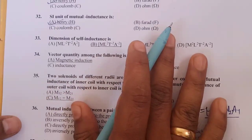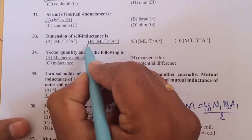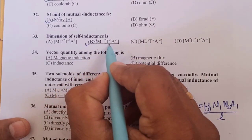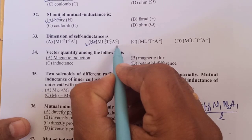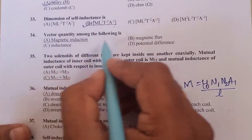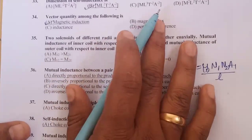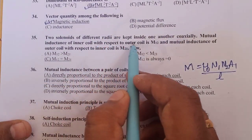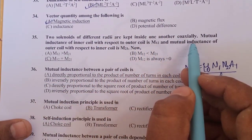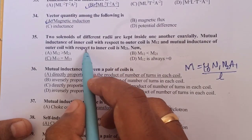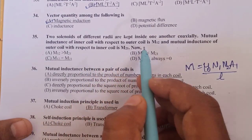SI unit of self inductance is Henry. SI unit of mutual inductance is also Henry. Dimension of self inductance is given by M1 L2 T to the power of minus 2 A to the power of minus 2. Vector quantity among the following is magnetic induction, it is a vector quantity.